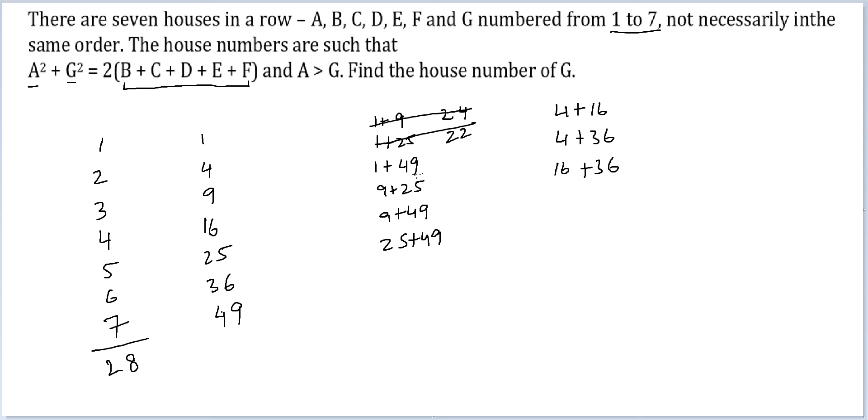9 plus 25, so removing 3 and 5, 8 is removed, 34 is not double of 20, case not acceptable. 9 plus 49, so 3 and 7 removed, 10, not acceptable. 25 plus 49, 12 removed, not double of 16. So all the odd cases have been ruled out.